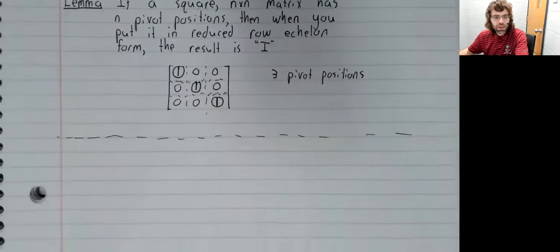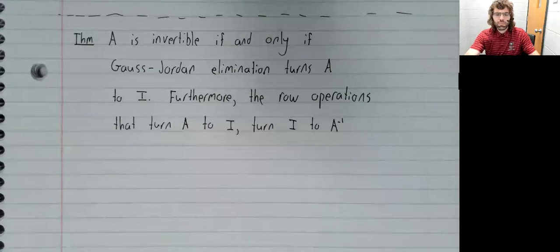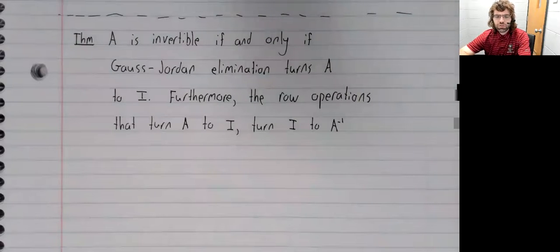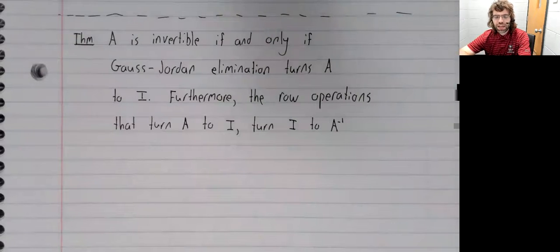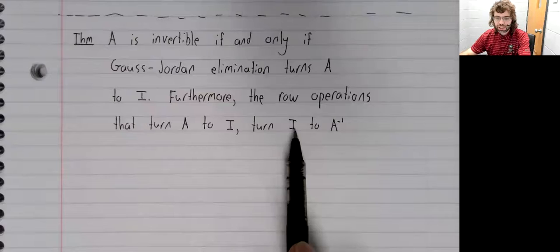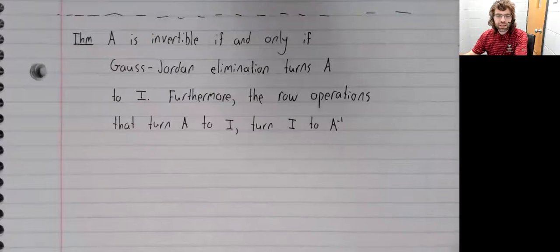With this lemma out of the way, let's state our real theorem for this video. Theorem: A is invertible if and only if Gauss-Jordan elimination turns A into the identity matrix I. Furthermore, the same row operations that turn A into the identity matrix turn the identity matrix into A inverse.